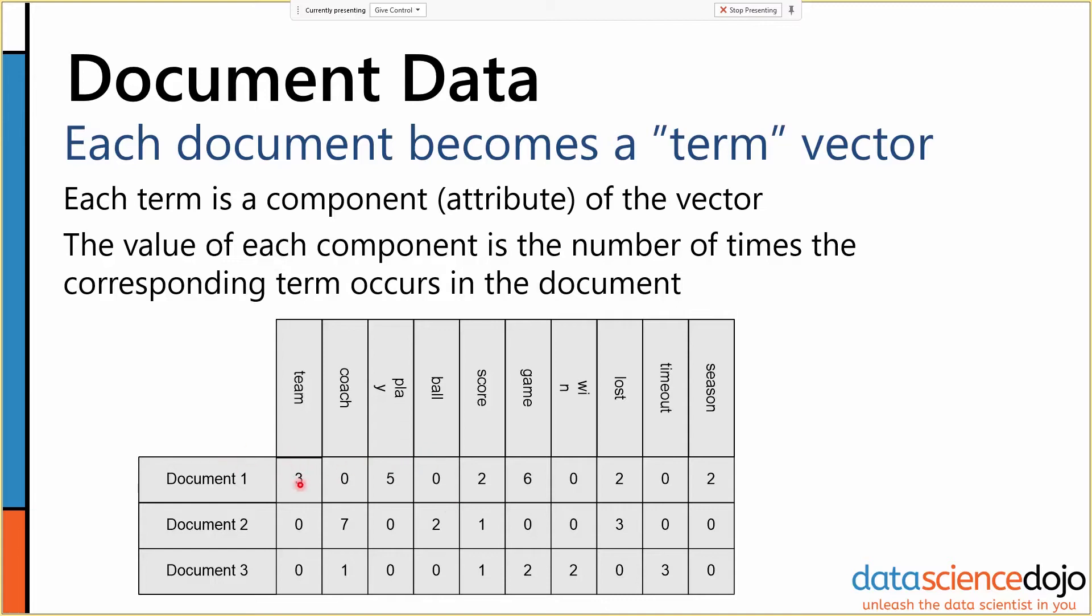So document one has team appear three times, play appear five, but coach appear none. Document two, on the other hand, has coach appear seven times, but never has play appear over the course of the document.